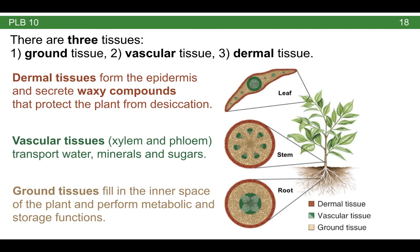Ground tissues essentially fill up all the internal space of the plant. They have other metabolic functions we'll talk about in future lectures. So you have dermal tissues on the outside, just like we saw on the leaf; vascular tissues on the inside that conduct sugar and water, shown here as patches of green; and then ground tissues, which fill in the rest of the space, shown here in that light brown color.